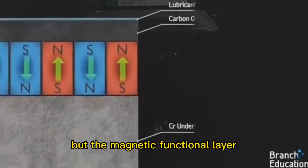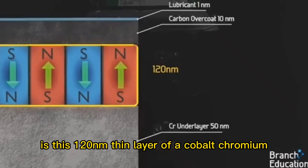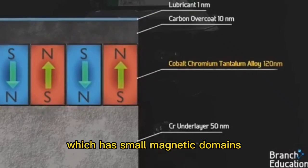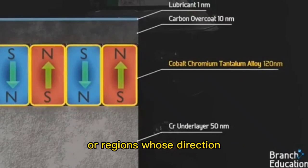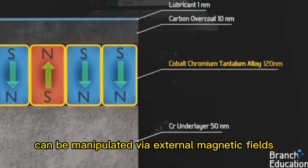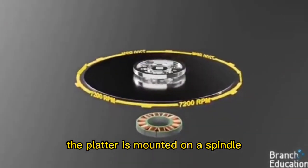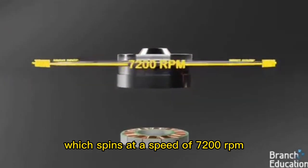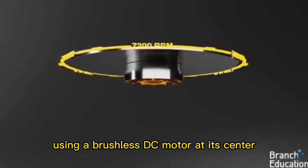But the magnetic functional layer is this 120 nanometer thin layer of a cobalt chromium tantalum alloy which has small magnetic domains or regions whose direction can be manipulated via external magnetic fields. The platter is mounted on a spindle which spins at a speed of 7200 rpm using a brushless DC motor at its center.